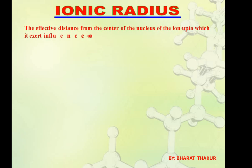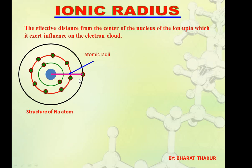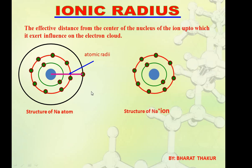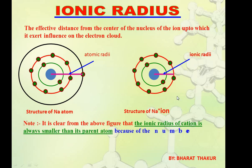Now, ionic radius. When an atom loses or gains an electron it becomes an ion. The ionic radius is the effective distance from the center of the nucleus of the ion up to which it exerts influence of the electron cloud — that is, up to the outermost shell containing electrons. For example, sodium has 11 protons and electrons in shells 2, 8, 1. When sodium loses one electron, the third shell becomes empty and is removed. Now protons are 11 but electrons are only 10, so the nucleus attracts electrons more strongly and atomic size decreases. The ionic radius of a cation is always smaller than its parent atom.